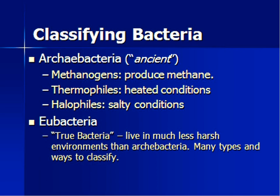So how do we organize bacteria? How do we classify them? There are two kingdoms. Remember that from last week about classification. When we classify bacteria, there are two types: archaeobacteria, which is like the ancient bacteria, and eubacteria, which is like the normal bacteria found everywhere around us. Eubacteria — I'll talk about them first because they're everywhere. They live in much less harsh environments than archaeobacteria. There are many types and ways to classify them.